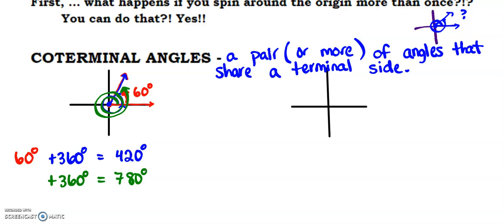All of those angles, 60, 420, 780, are coterminal to one another. And more specifically, they're all positively coterminal. Not because I added 360, but because they all ended up as positive values. Because they're positive numbers.